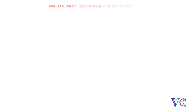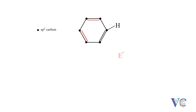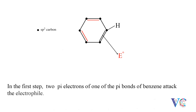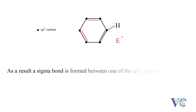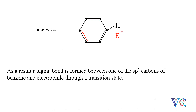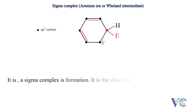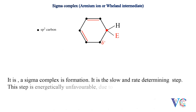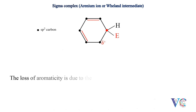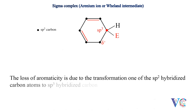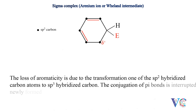In the first step, two pi electrons of one of the pi bonds of benzene attack the electrophile. As a result, a sigma bond is formed between one of the sp2 carbons of benzene and the electrophile through a transition state. This is a sigma complex formation. It is the slow and rate determining step. This step is energetically unfavorable due to the loss of aromaticity. The loss of aromaticity is due to the transformation of one of the sp2 hybridized carbon atoms to sp3 hybridized carbon. The conjugation of pi bonds is interrupted by the newly formed sp3 hybridized carbon.